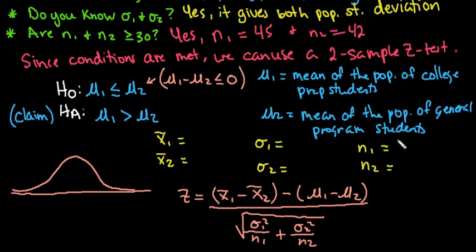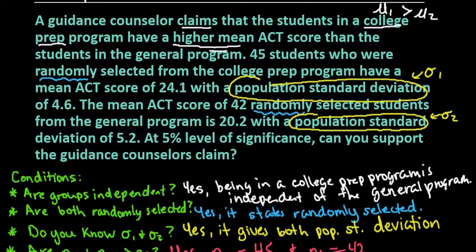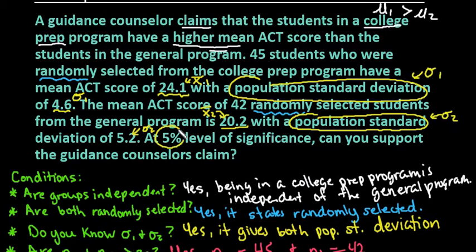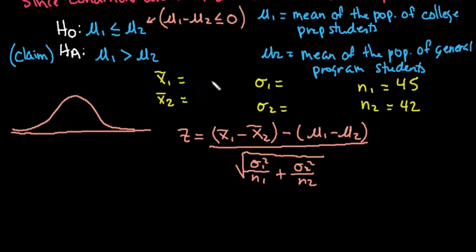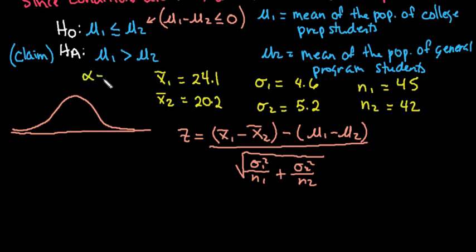N one is 45 and n two is 42. From the problem: x-bar one is 24.1 with sigma one of 4.6 for college prep students; x-bar two is 20.2 with sigma two of 5.2 for the general program. Our alpha level is 0.05, which is our level of significance.